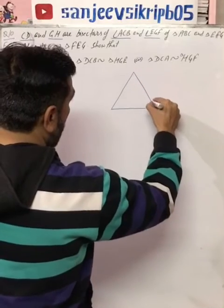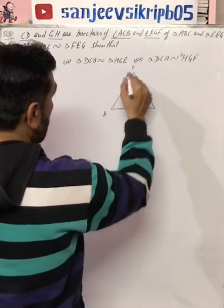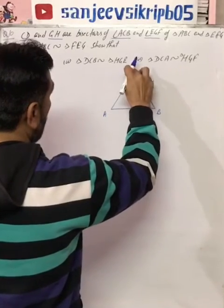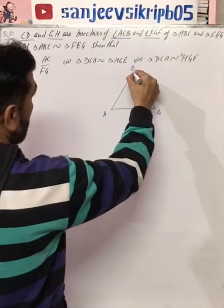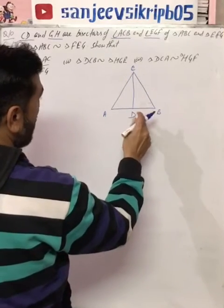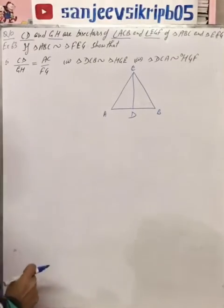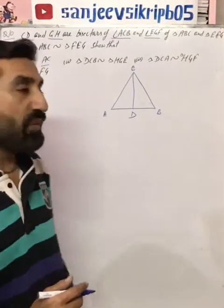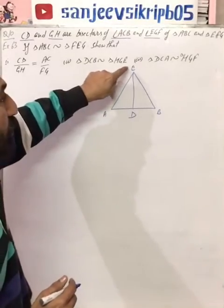Triangle A, B, C. So why do I have bisectors? Because the bisector is CD. So my diagram is easy. If I have bisectors here, the bisectors would come here. So this diagram is easy to see. I have bisectors.